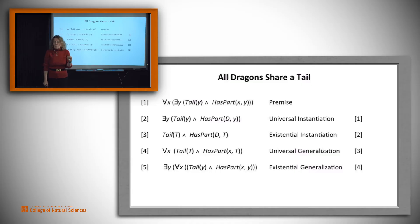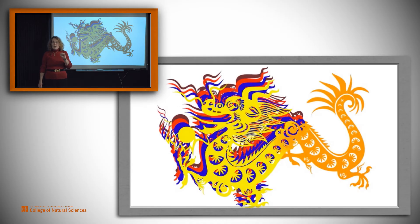Now, should we have been able to do this? Does this follow from our claim? And the answer is no. It's not true that all dragons share a tail. So what went wrong?